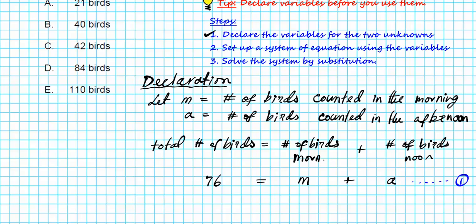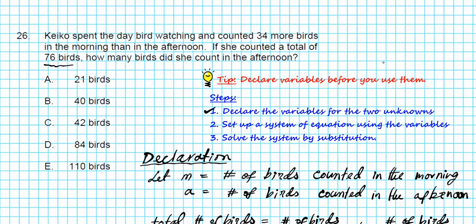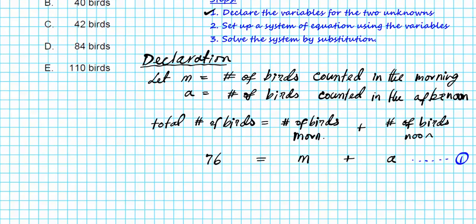There's another statement in the problem that can help us generate the second equation. The statement is that Kiko was able to count 34 more birds in the morning than in the afternoon. So M is the total number of birds in the morning. How does that relate to the total number of birds in the afternoon? We're going to take the number of birds in the afternoon and add 34 to that. So M = A + 34. This is equation number two.